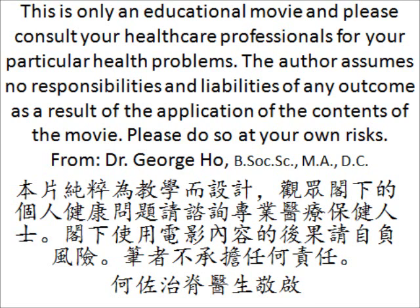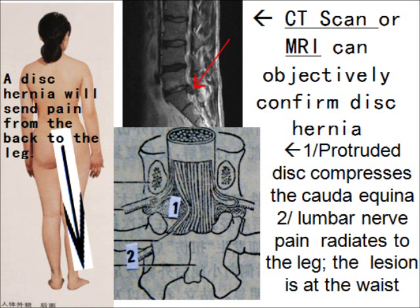There are several ways to diagnose lumbar disc hernia. If you're not sure, or your doctor is not sure, a CT scan or MRI can objectively confirm the diagnosis. Most textbooks will tell you disc hernia will send radiating pain from the back to the leg. As indicated in the diagram, number one is the cauda equina in the spinal canal, and when the protruded disc compresses onto it, pain goes down the leg along the lumbar nerve.